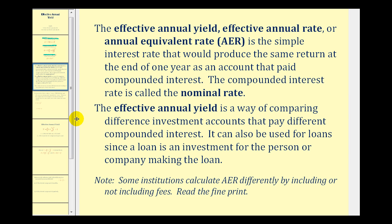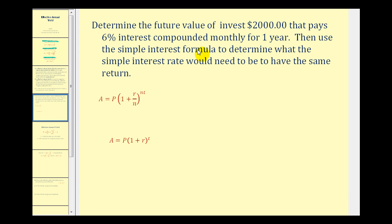Before we take a look at the formula for effective annual yield, let's look at an example. Determine the future value of an investment of $2,000 that pays 6% interest compounded monthly for one year. Here's our compounded interest formula — let's go ahead and answer this first question.